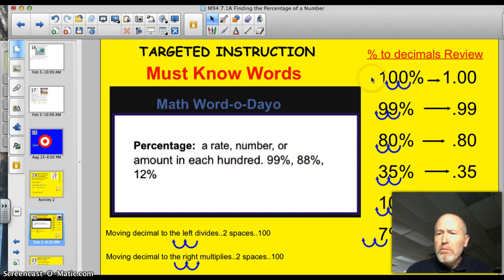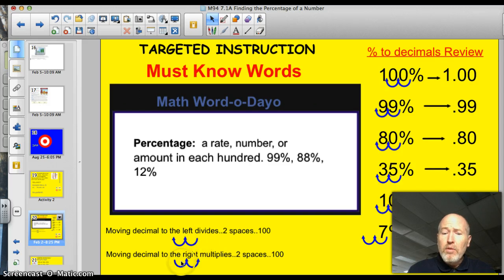Tonight, we're going to be moving decimals two spots. When we move a decimal two spots to the left, we're dividing by 100. I've got it right down here. Moving decimals to the left divides. Two spaces is 100. Three spaces would be 1,000. So, tonight, it's always going to be two spaces.